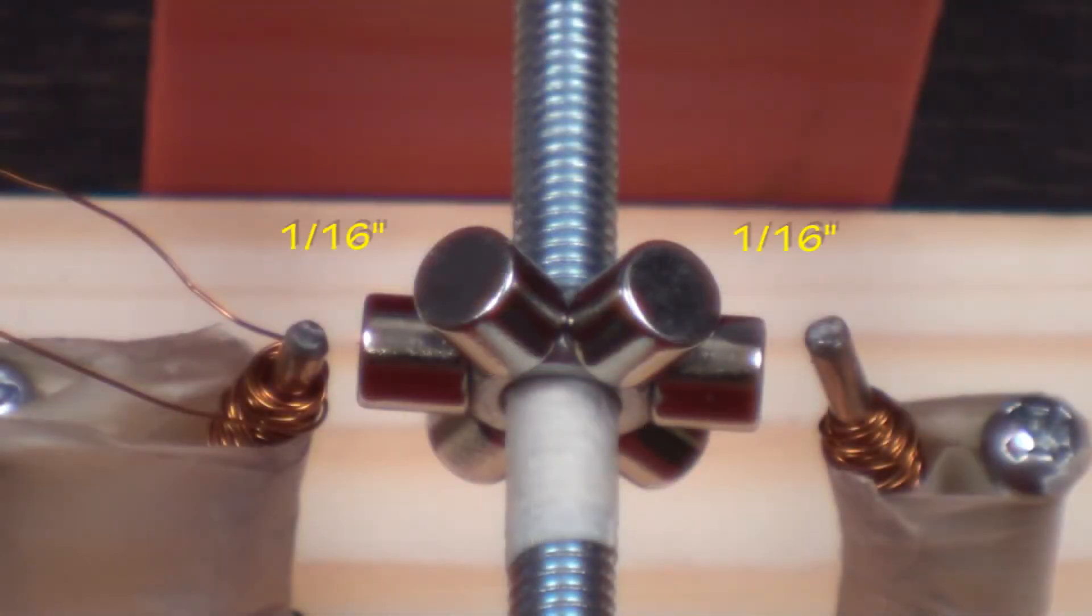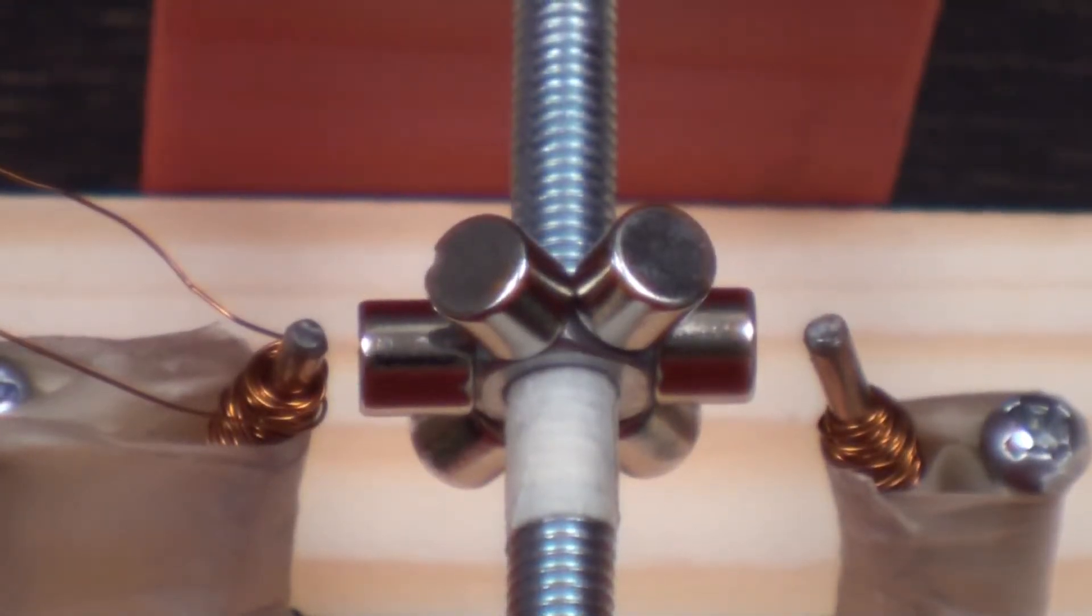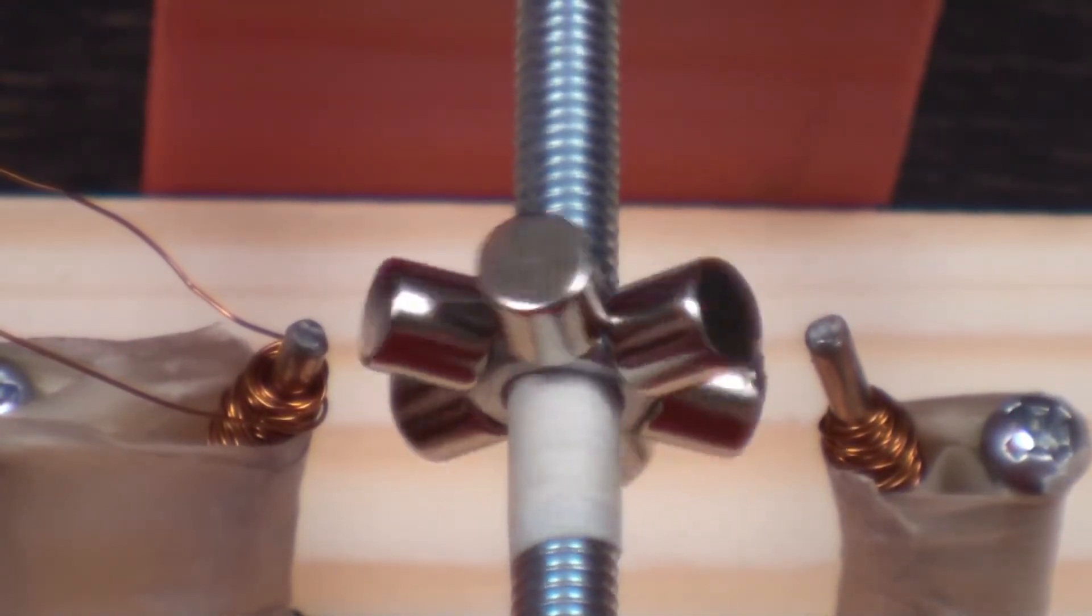Make sure the tips of the coil are about 1/16th of an inch away from the magnet, as this allows more current to be generated. Spin the bolt to make sure that the magnets clear the coil.